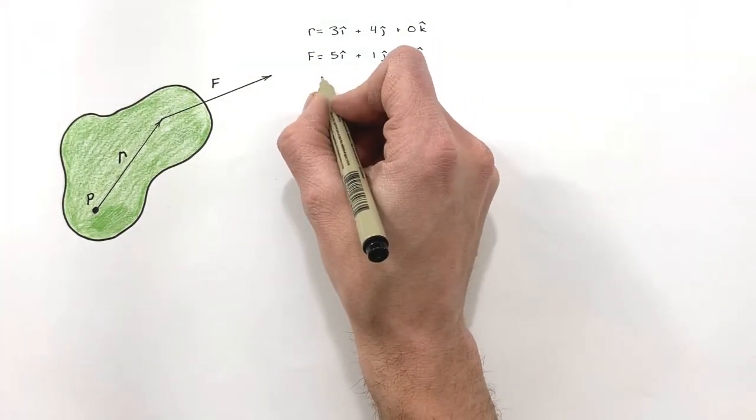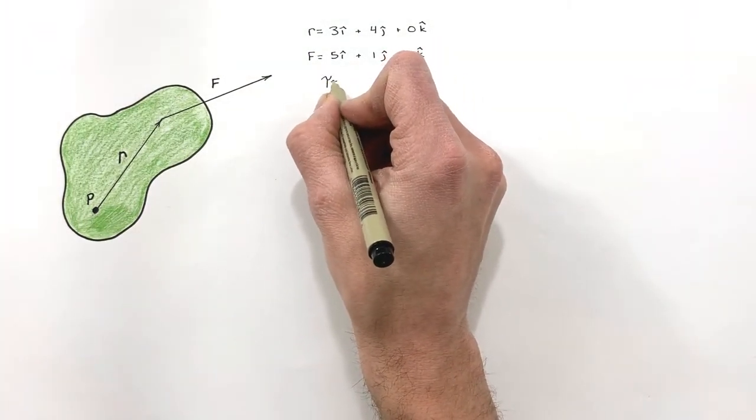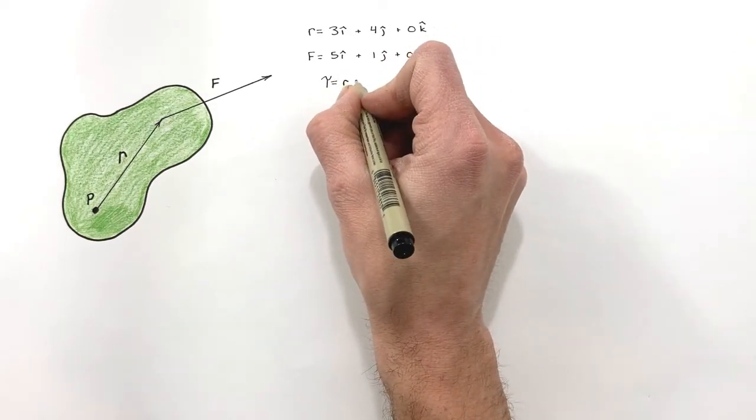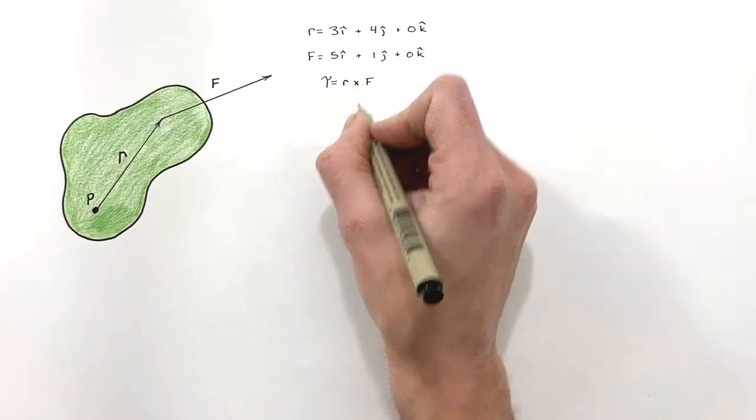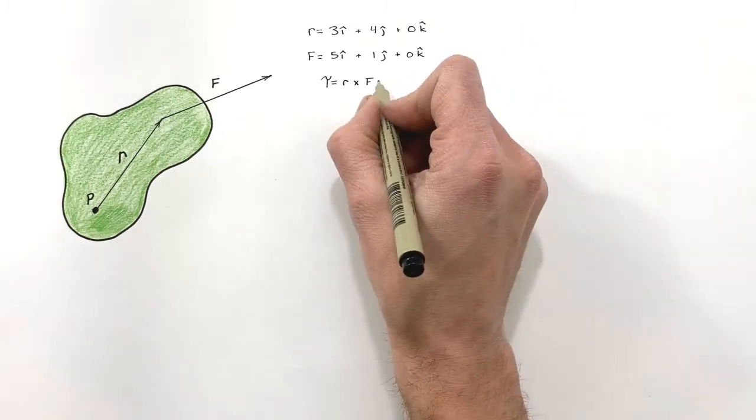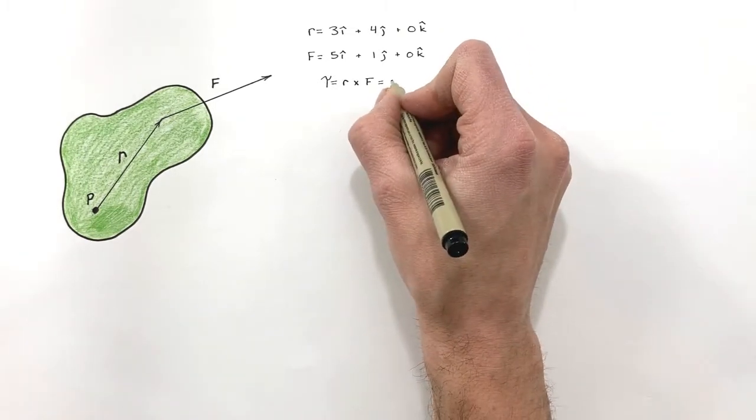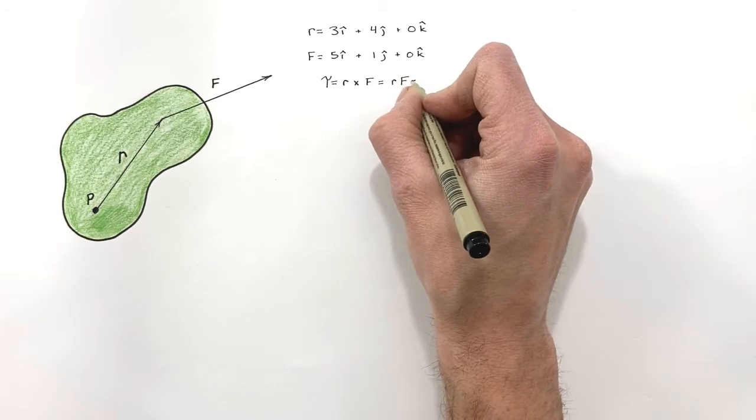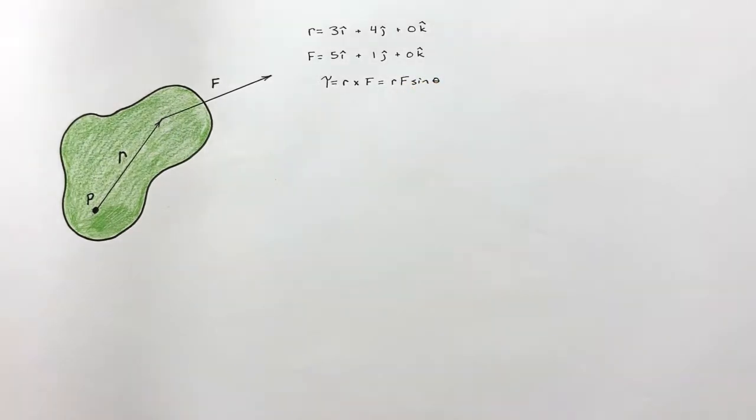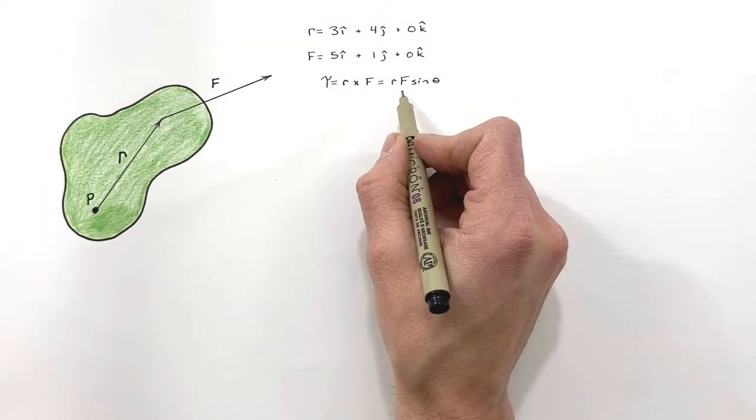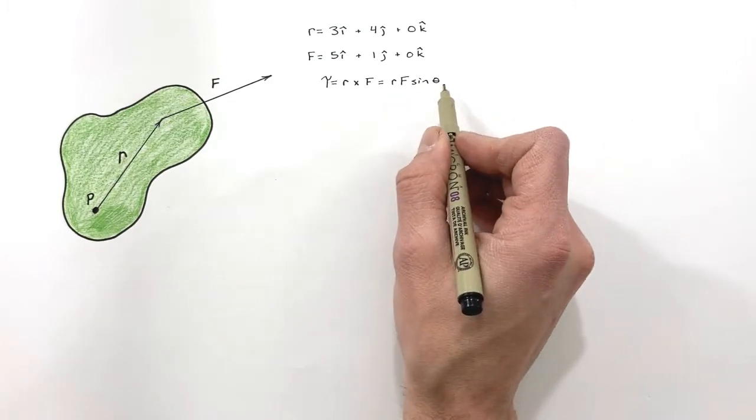Now we've seen in the past that torque is defined as R cross F. And typically what we do is we say that torque is then equal to, in two dimensions, R F sine theta. And it would be completely acceptable to solve this problem using R F sine theta.